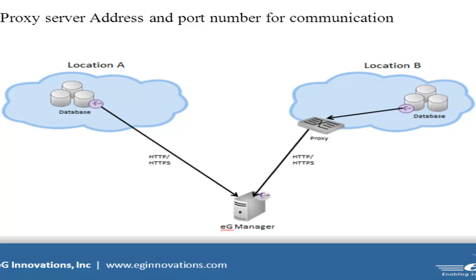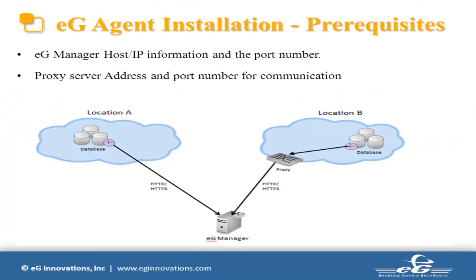In that case, we need the proxy server IP address and the port number for EG Manager and agent communication. If authentication is involved for the proxy, then we need the username and the password also. Since we have all the information ready, now let us start the EG Agent installation.